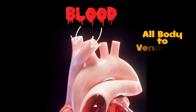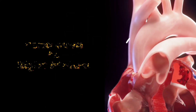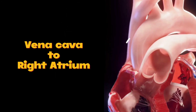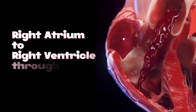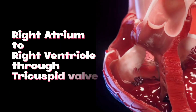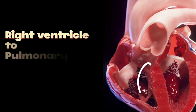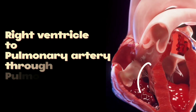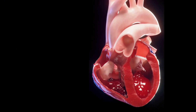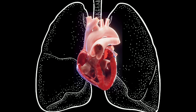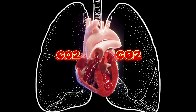Blood from all over the body enters into vena cava. From vena cava it goes into right atrium. From right atrium blood enters into right ventricle with opening of tricuspid valve. From right ventricle blood leaves the heart and enters into pulmonary artery with opening of pulmonary valve. Pulmonary artery takes the blood into lungs where it picks up oxygen and dumps carbon dioxide.